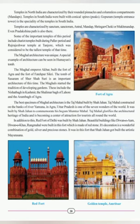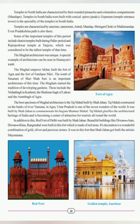Temples are characterized by sanctum sanctorum, antral, mandap, shringar choki or muk mandap, and Pradakshina path around the temple for circumambulation. The inner sanctum is also known as garbhagriha. Important temples of this period include chariot temples built during the Pallava period and the Raj Rajeshwar Temple at Tanjore, which was considered the tallest temple of its time.